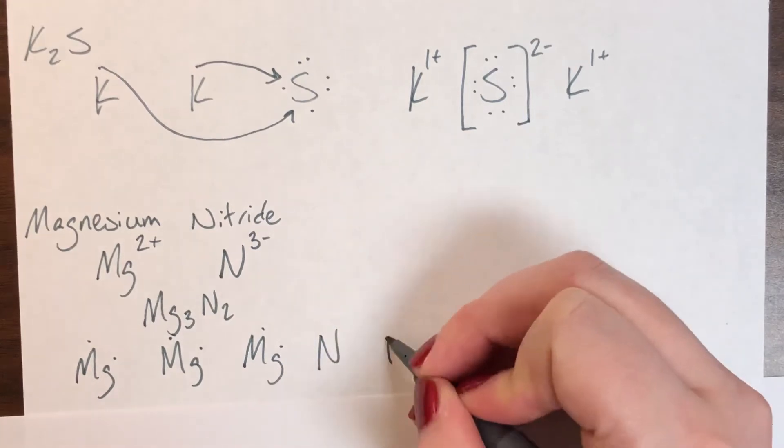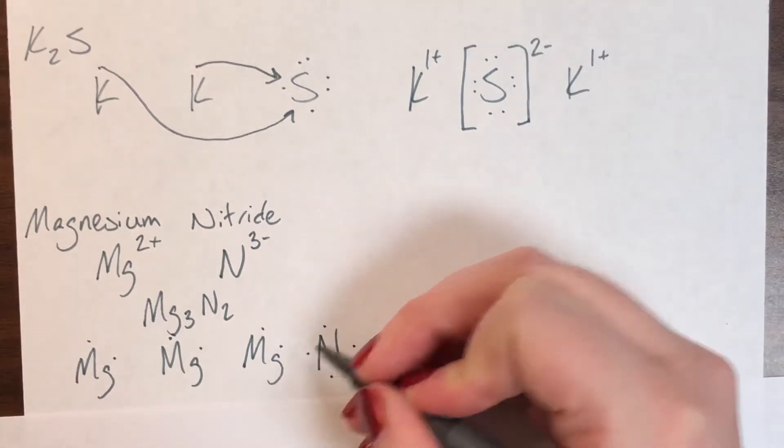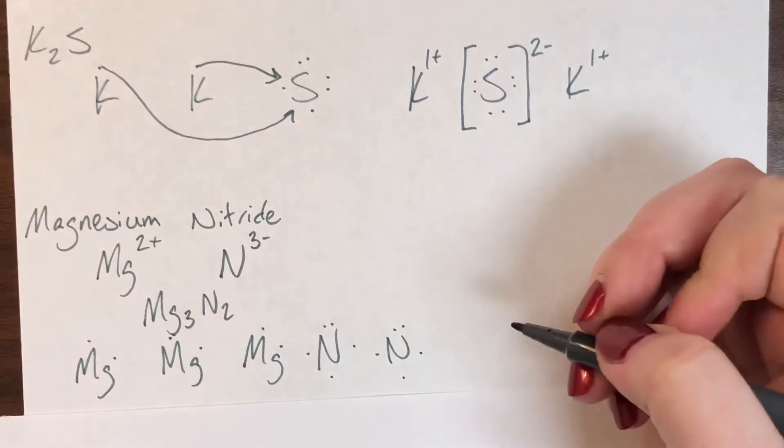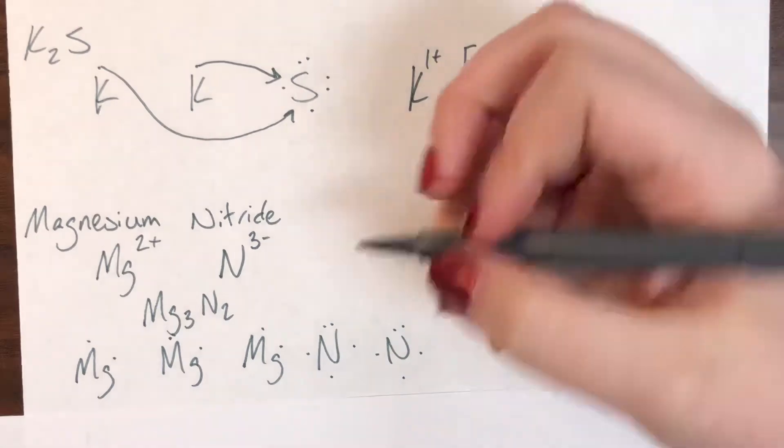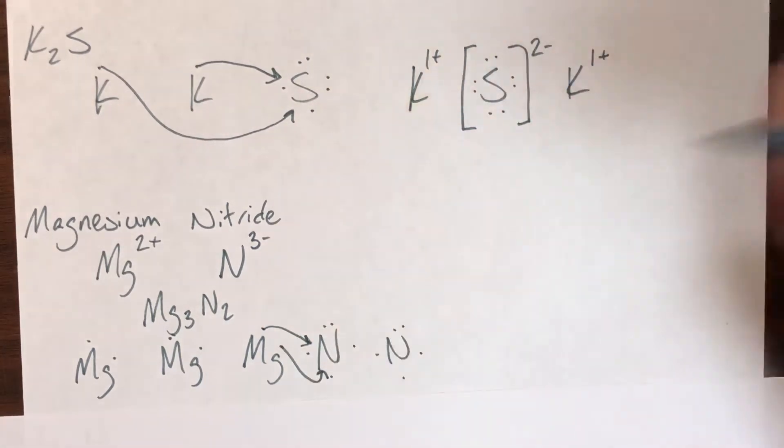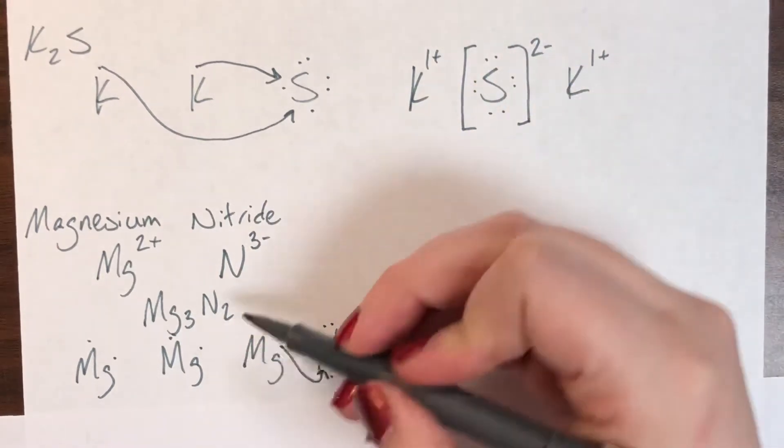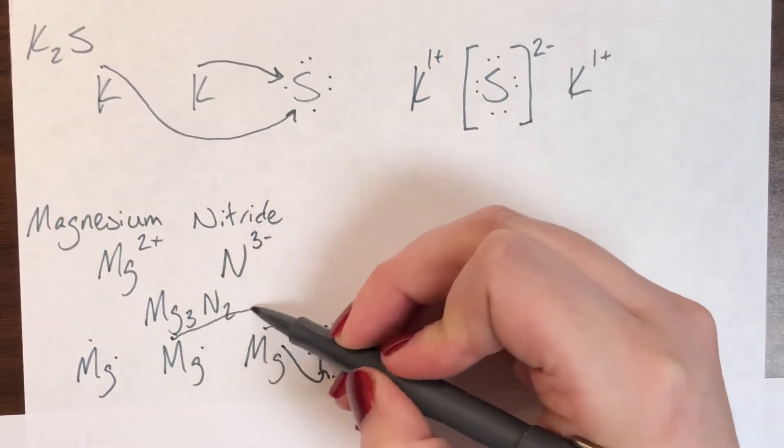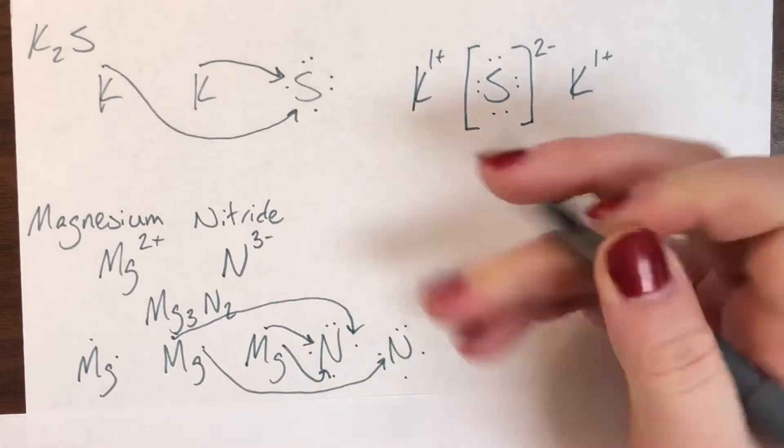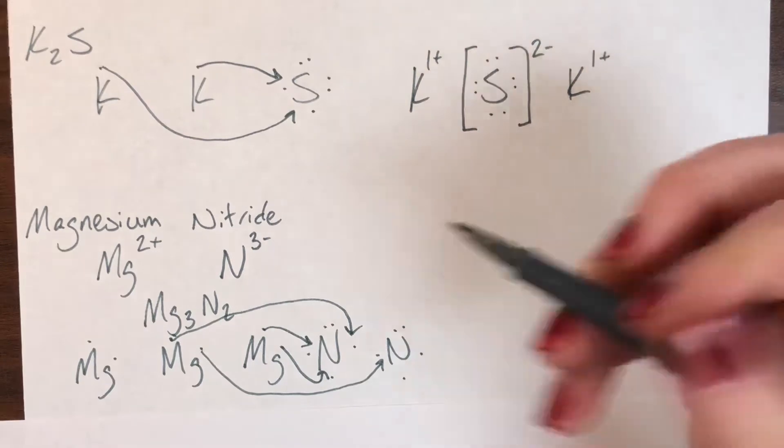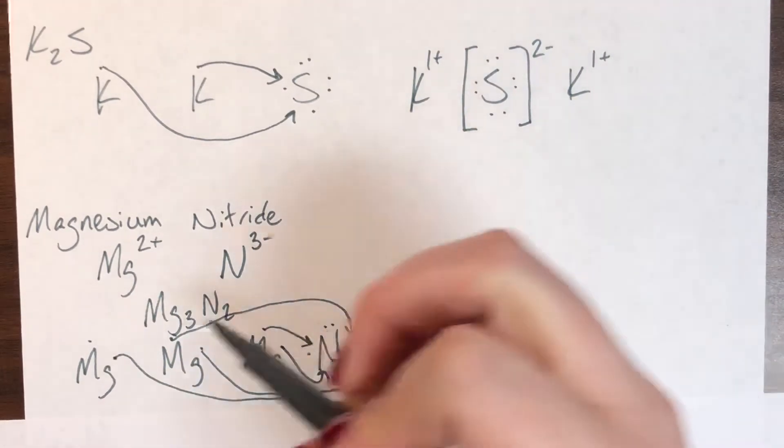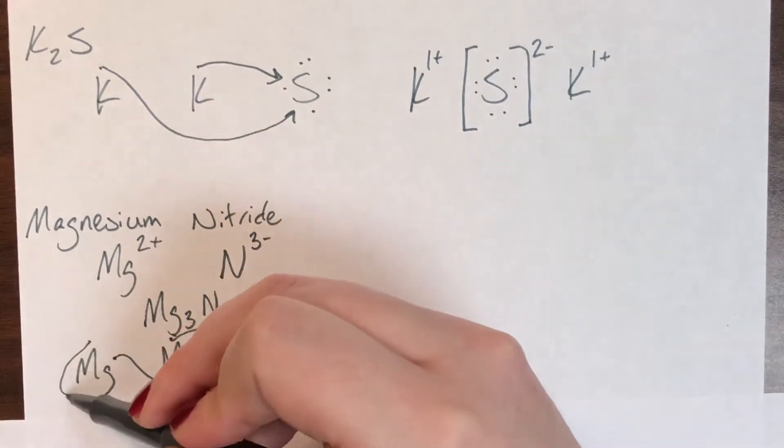And two nitrogen so one, two, three, four, five, one, two, three, four, five, and then I'll go ahead and I'll start drawing those transfers. So we have one magnesium is able to completely give away its electrons to one nitrogen. One has to split between the two nitrogens and then this last one is also going to be able to completely give away its electrons to just one nitrogen.